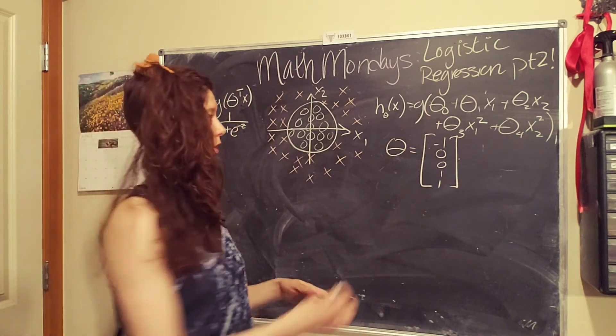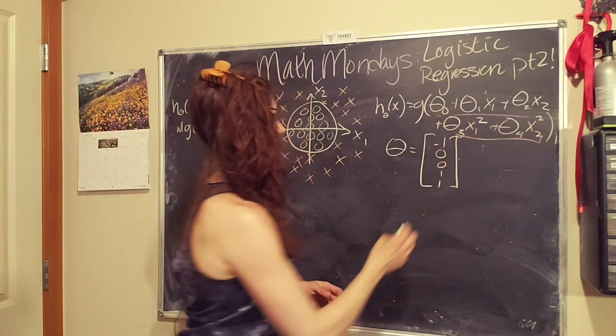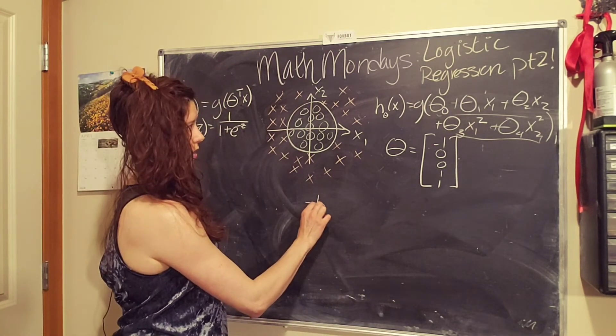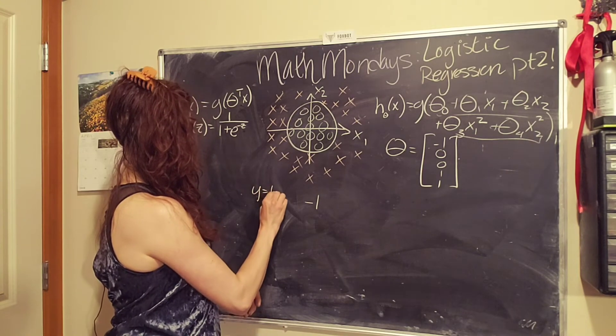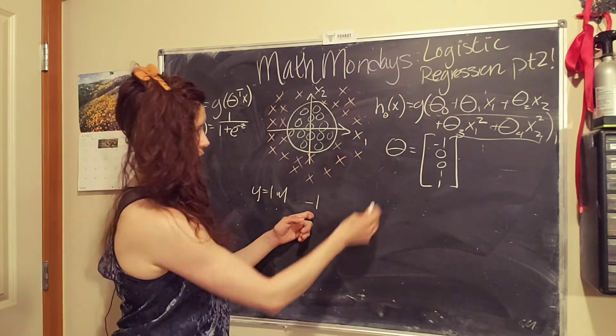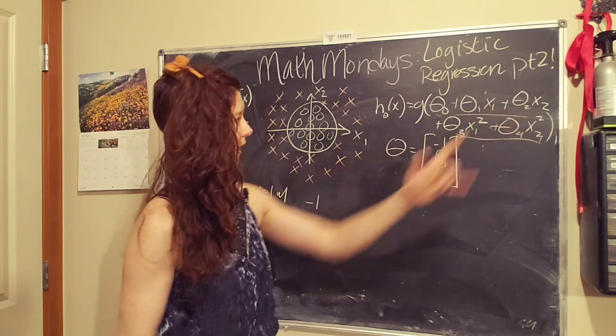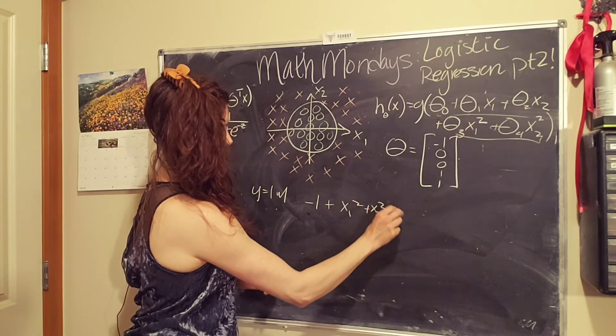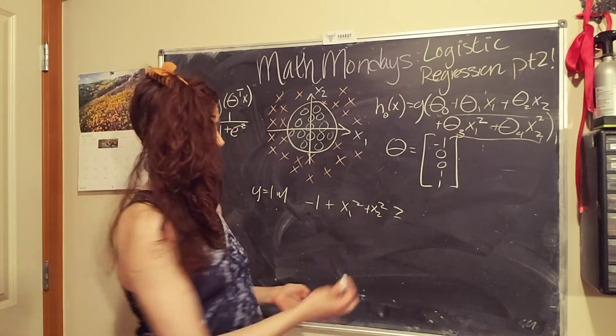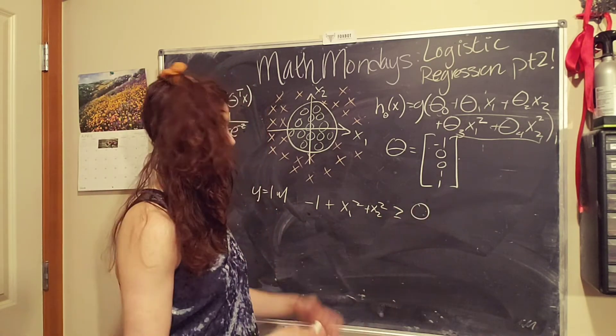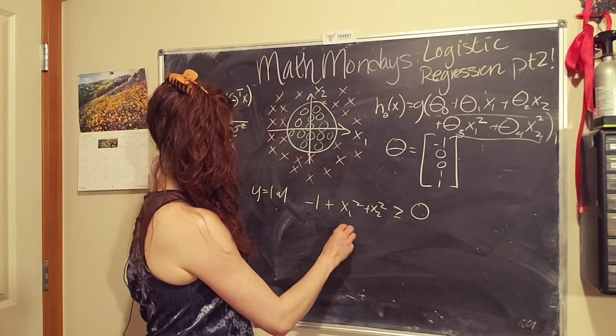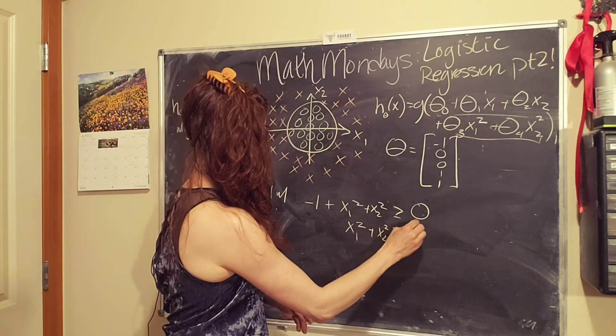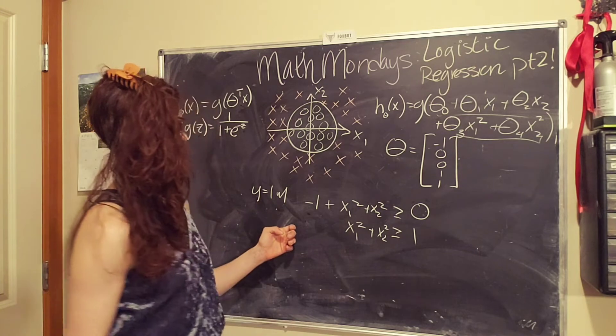And let's say it gives us a parameter matrix of negative one, zero, zero, one, and one. So we plug that back into our hypothesis function, this shenanigans. And so we get negative one, well, so then we know that Y equals one, when negative one, these two parts cancel and we are left with X one squared plus X two squared. And this equals one when we have this part greater than zero.